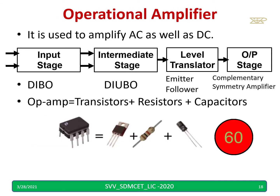This is the operational amplifier block diagram. The input stage has dual input balanced output. The intermediate stage has dual input unbalanced output — dual input means two inputs, balanced output means two outputs, and unbalanced output means only one output. This is followed by a level translator to reduce the DC voltage, and then the output stage. The op amp basically contains transistors, resistors, and capacitors.